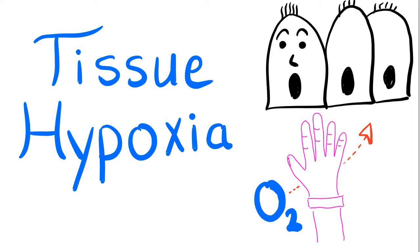Hey guys, it's Medicosis Perfectionals, your favorite medical channel. We resume our discussion about the topics of pulmonology or respiratory medicine. Today we'll talk about tissue hypoxia. In the previous video we talked about the delivery of oxygen to the tissue. Today we will see what will happen when oxygen is no longer delivered to the tissue.